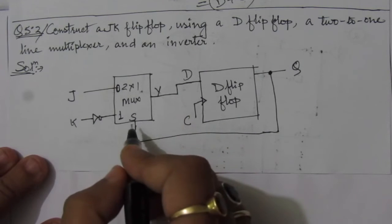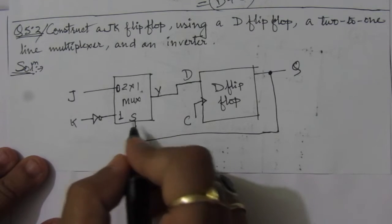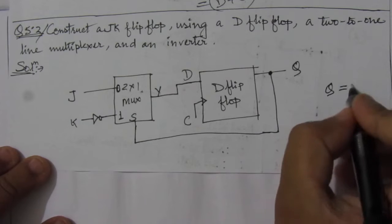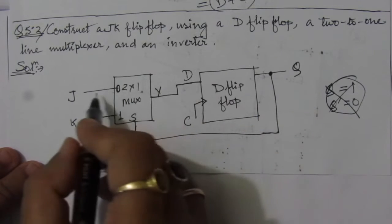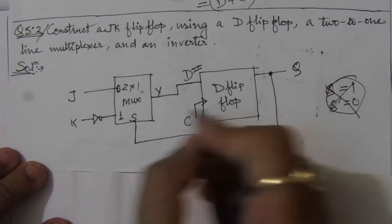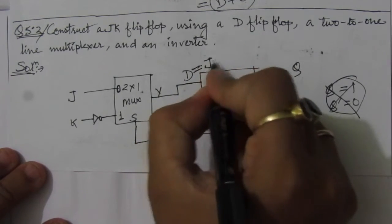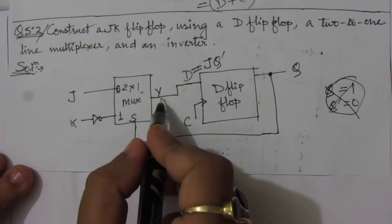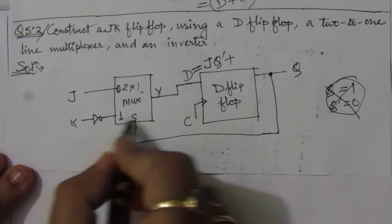Whenever Q equals 0 (Q-bar = 1), the J input will be connected to the output Y. So when S equals 0, that is Q-bar, we have D equal to J·Q-bar. When Q equals 1 (S equals 1), the K input will be connected to the output.